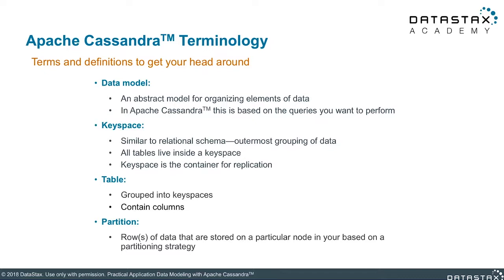Let's start with the basics: the data model. A data model is not just a Cassandra topic — every database has a data model. The type of data model each one has is going to be different based on its capabilities. For Cassandra, the abstract model covers how it gathers, uses, and stores data. Understanding how Cassandra stores data is one of the most important pieces, because it will make your data models better.